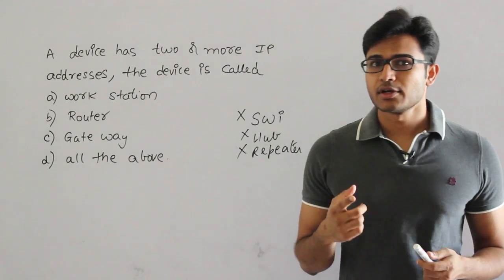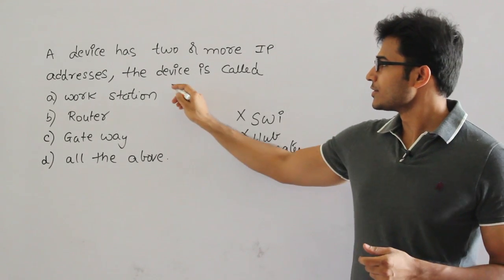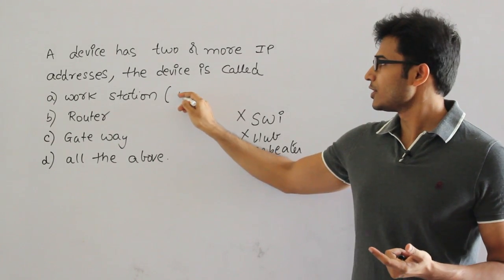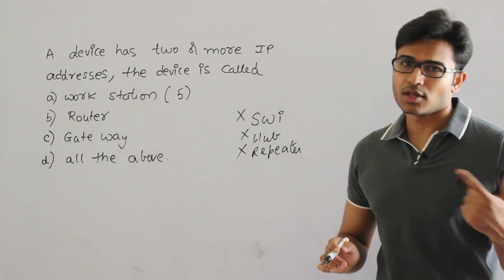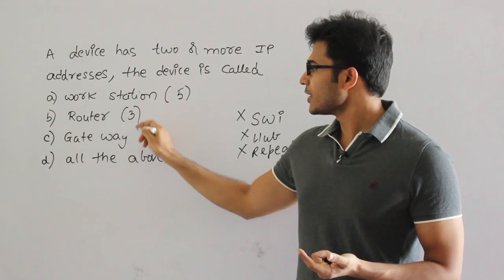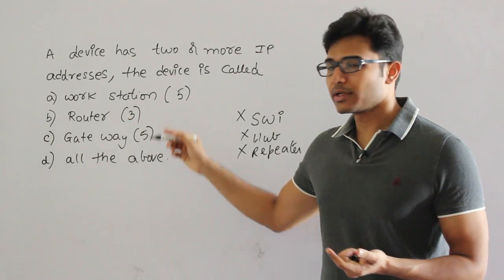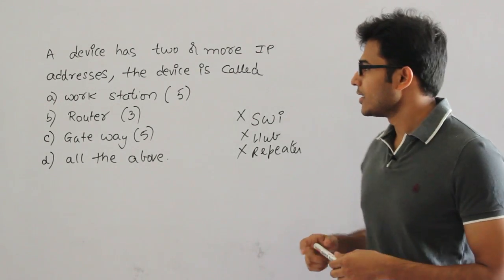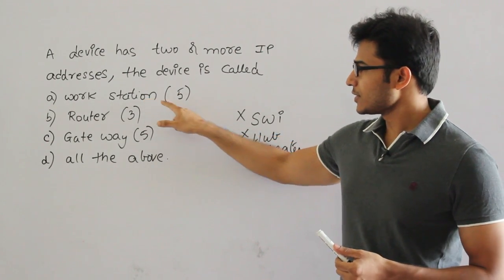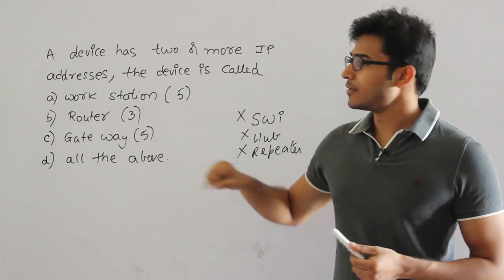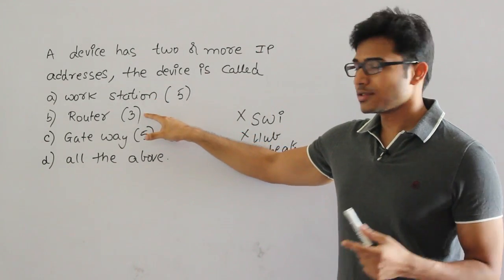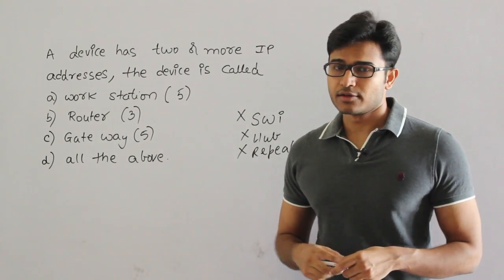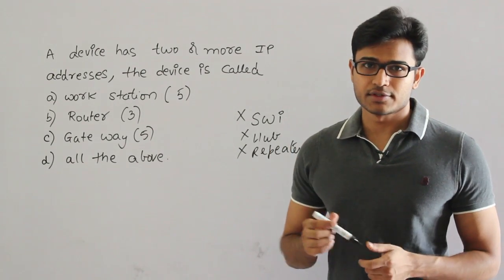So what are the devices that have network layer and above? A workstation has all the layers — in TCP/IP, all 5 layers. A workstation will have all the layers. Router will have only 3 layers and gateway will have all 5 layers, assuming that it is TCP/IP. If it is OSI, we can assume they have all the layers. Router has the network layer, therefore it will get at least one IP address. And gateway is also having network layer, therefore it should also get at least one IP address.